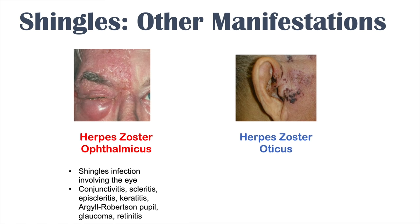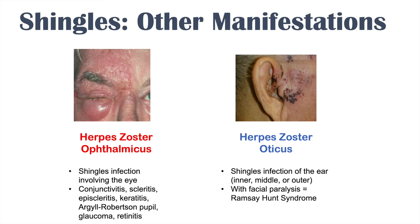The other manifestation is herpes zoster oticus — a shingles infection involving the outer, middle, or inner ear. This is also very important because we don't want to lose hearing in the affected ear. If there is facial paralysis associated with herpes zoster oticus, it is known as Ramsay-Hunt syndrome.